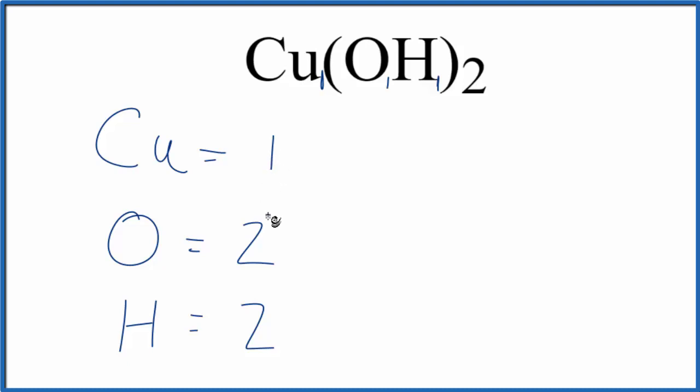Sometimes you're asked to find the number of, for example, oxygen atoms in one mole of copper two hydroxide. To find that, you just take the number of atoms and multiply that by Avogadro's number.